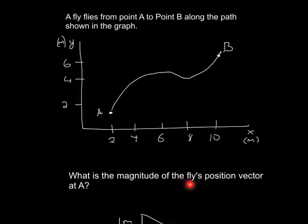And the question is, what is the magnitude of the fly's position vector at A? So you have to remember that magnitude is the absolute value, so it will always be positive. Magnitude will always be positive.